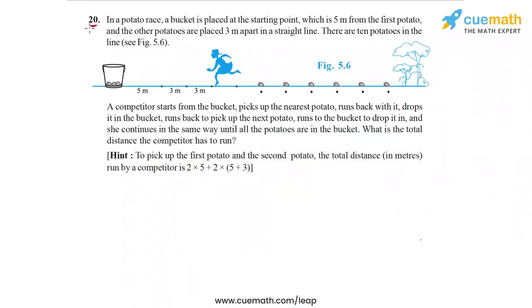Here's question number 20 of this exercise. In a potato race, a bucket is placed at the starting point. This is the bucket and it is placed at the starting point, which is 5 meters from the first potato. So this position is 5 meters away and this is where the first potato would be placed. The other potatoes are placed 3 meters apart in a straight line.